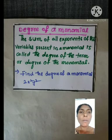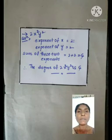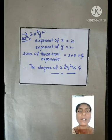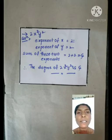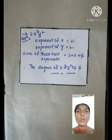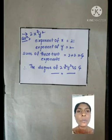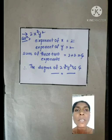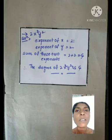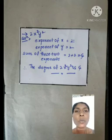Now we have to find the Degree of a Monomial. For example, 2x²y². There is one term, and an algebraic expression containing one term is called a monomial. There are two variables, x and y. The exponent of x is 2 and the exponent of y is 2. The Degree of 2x²y² is the sum of all exponents: 2 plus 2 equals 4. So the Degree of 2x²y² is 4.